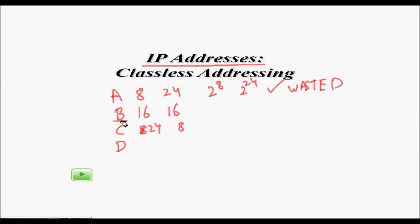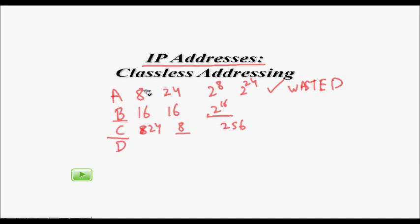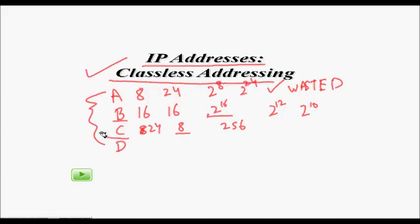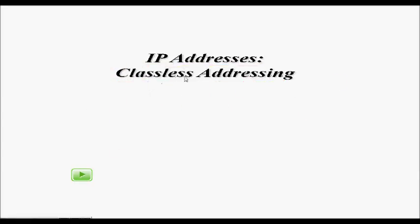Class B still had 2 to the power of 16 addresses in each network, causing significant wastage. Class C has many networks but only 256 hosts per network, which became too small. It was rigid — only fixed classes were available. If you want 2 to the power of 12 or 2 to the power of 10 hosts, it's not allowed. So if you want to be flexible, the solution is classless addressing, which provides different sizes of networks.